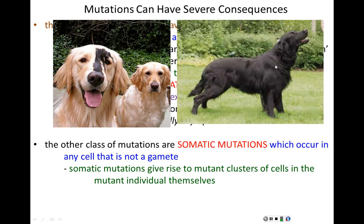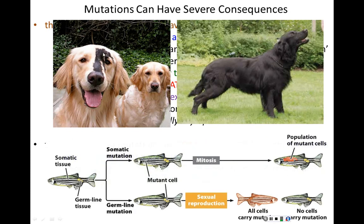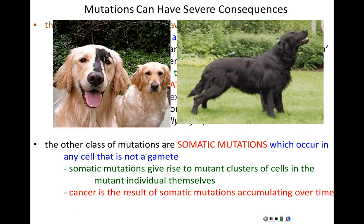Germline mutations affect the next generation in full; somatic mutations affect that individual in part. If that same mutation occurred in the gametes of the mother dog, the puppy would be all brown. A fish with a somatic mutation shows a patch of mutant cells on itself; if the same fish picks up a germline mutation, it is unaffected, but some of its offspring will be completely affected. Cancer is the result of somatic mutations accumulating in the individual over time.